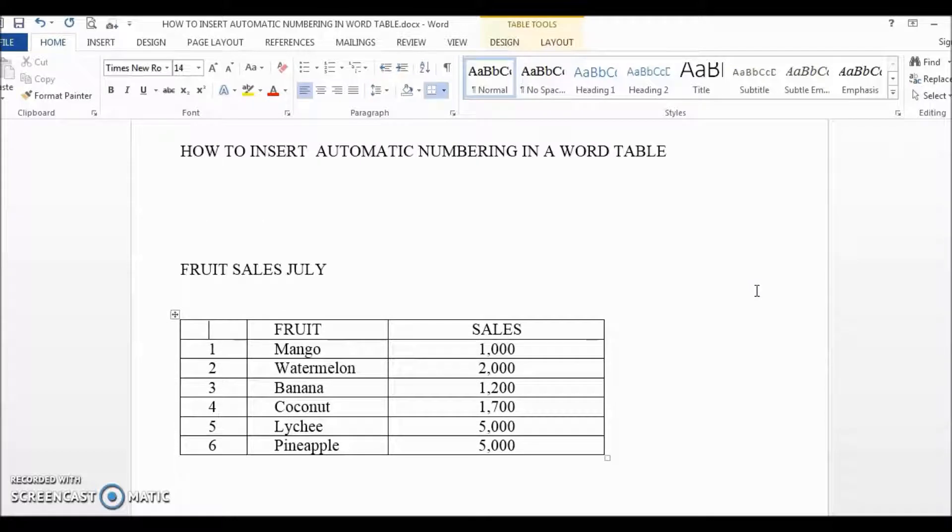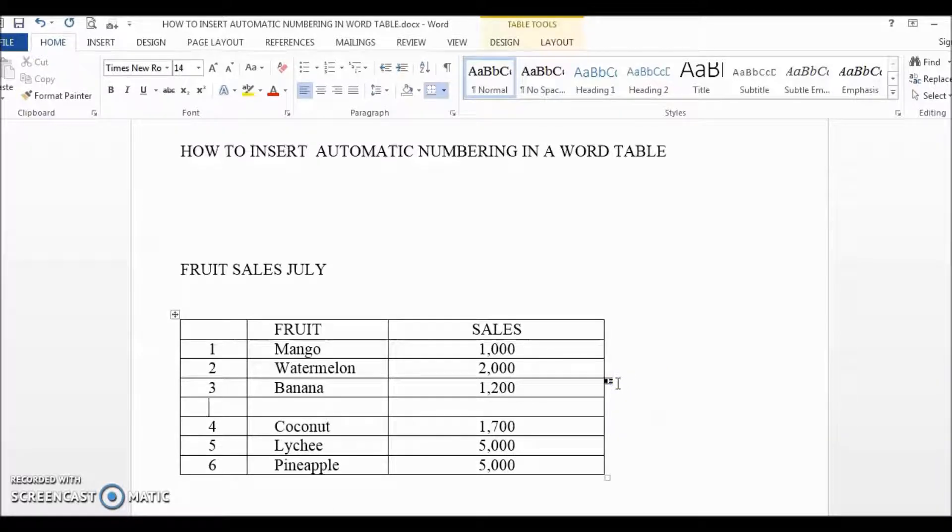So I have a very simple sales list here and it looks great until the table grows or more data are being added. For example, if I want to insert a new row after banana to add in the sales data for apple, then that's when I have a problem because not only do I have to add the apple sales data but I also need to manually correct the sequence number of all the rows below it.